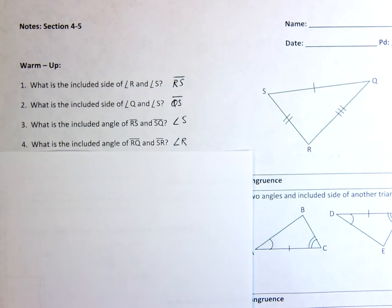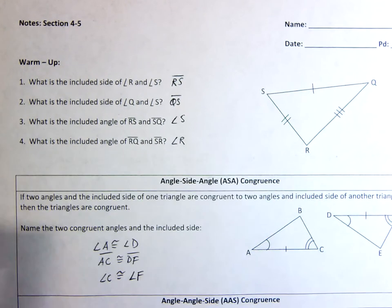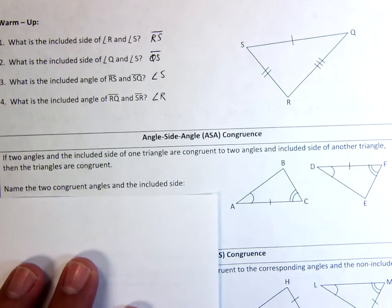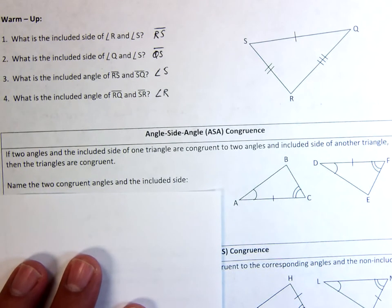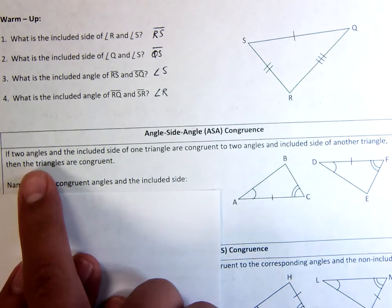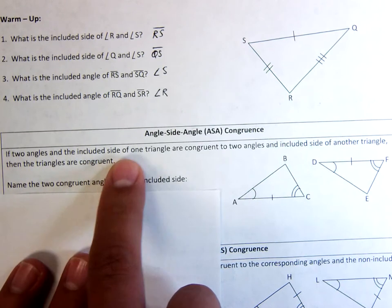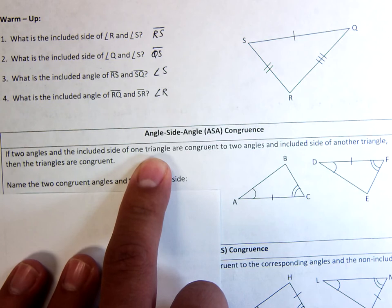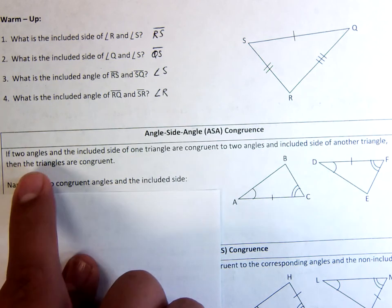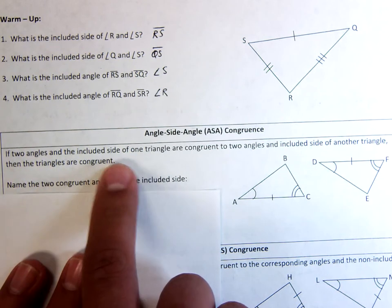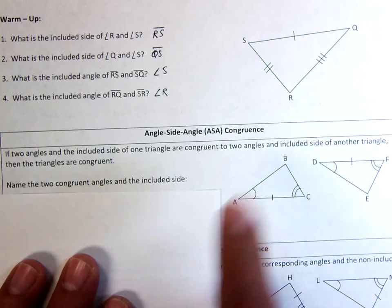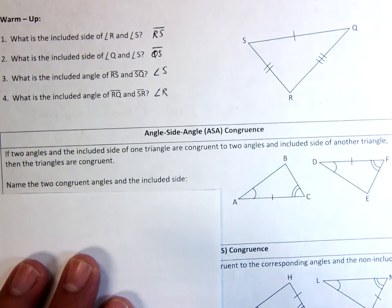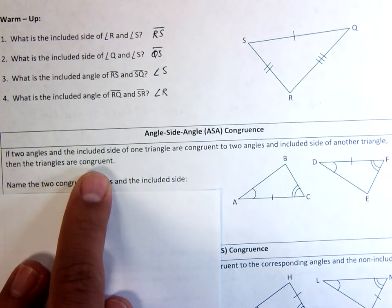We've talked about SSS and SAS. Today we've got to talk about ASA — Angle-Side-Angle. The order matters. If two angles and the included side of one triangle — not just any side, the included side between these two angles — are congruent to two angles and the included side of another, that is sufficient for us to say the triangles are congruent.